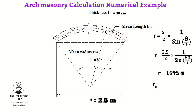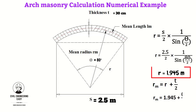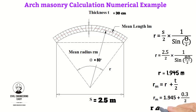The mean radius rm equals the simple radius plus the thickness of the arch divided by 2. So rm equals 1.945 plus 0.3 meters (30 centimeters) divided by 2. Therefore, the mean radius rm equals 2.095 meters.